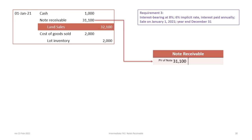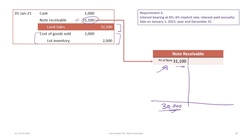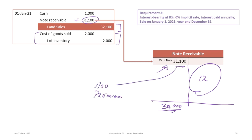The note receivable now has a balance of $31,100. At settlement date, this note needs to have a value of $30,000, meaning there will have to be credits to reduce its debit balance of $31,100. We have to amortize that difference of $1,100 — this is the premium on the note, which has to be amortized down to zero.